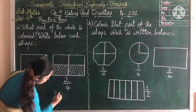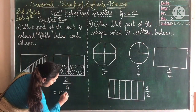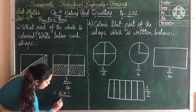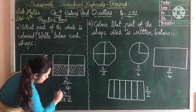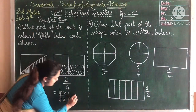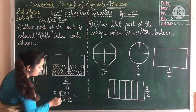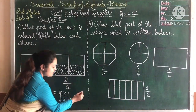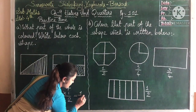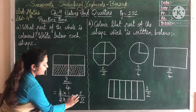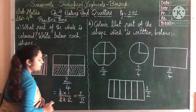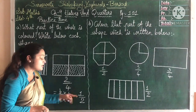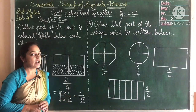Let me show you that. Two over four — we will cancel the two from both upper and lower side, and we get again half. That's why two-fourth is also considered as half only.